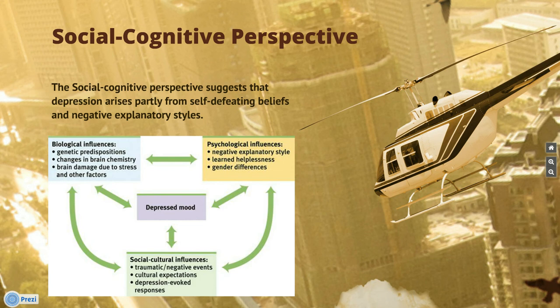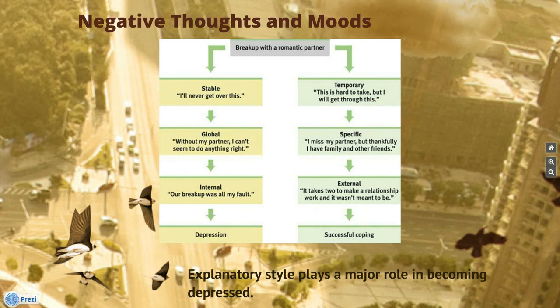The social cognitive perspective suggests that depression arises partly from self-defeating beliefs and negative explanatory styles. Biological influences include genetic predispositions, changes in brain chemistry, and brain damage due to stress and other factors. Psychological influences include negative explanatory style, learned helplessness, and gender differences. Social-cultural influences include traumatic negative events, cultural expectations, and depression-evoked responses. Any of these can cause or be caused by one another, and any single one or combination of them can lead to a depressed mood, negative thoughts, and moods.